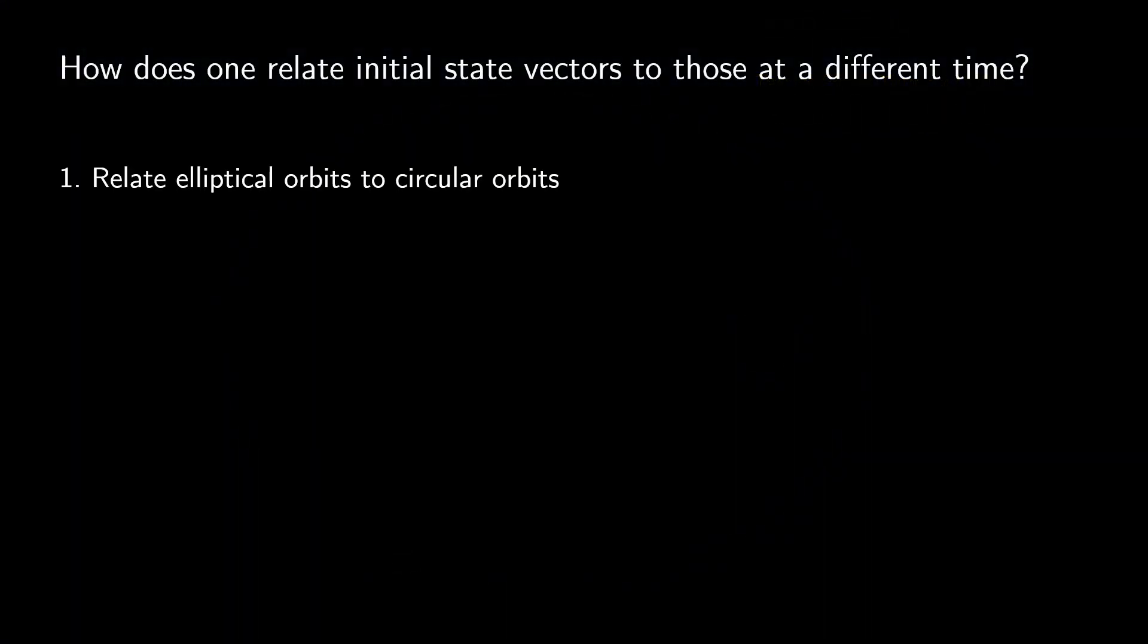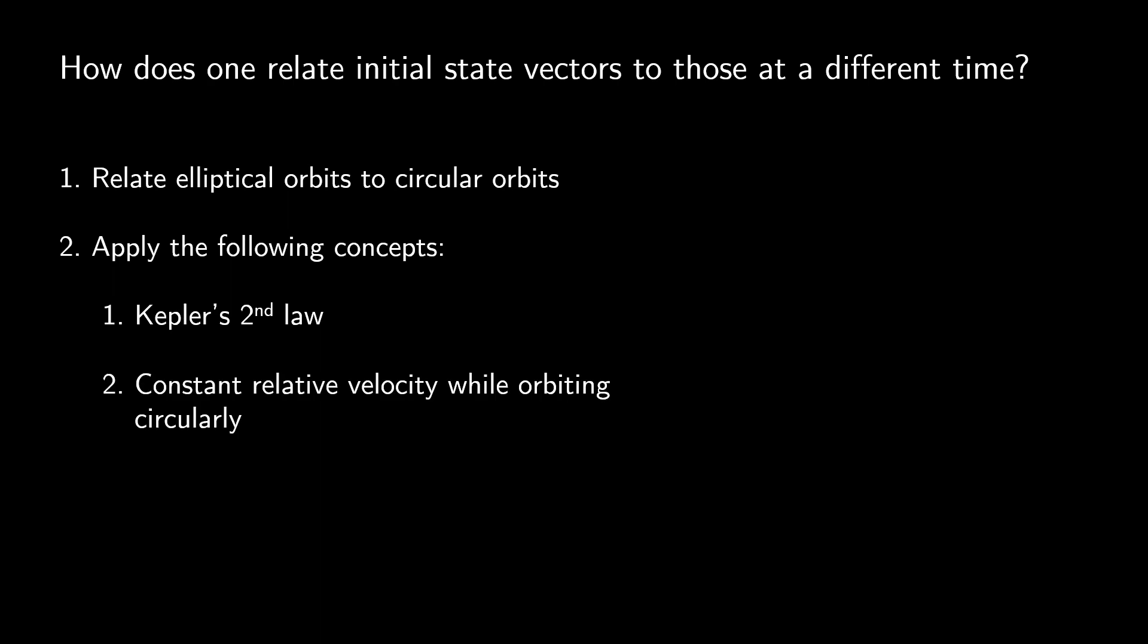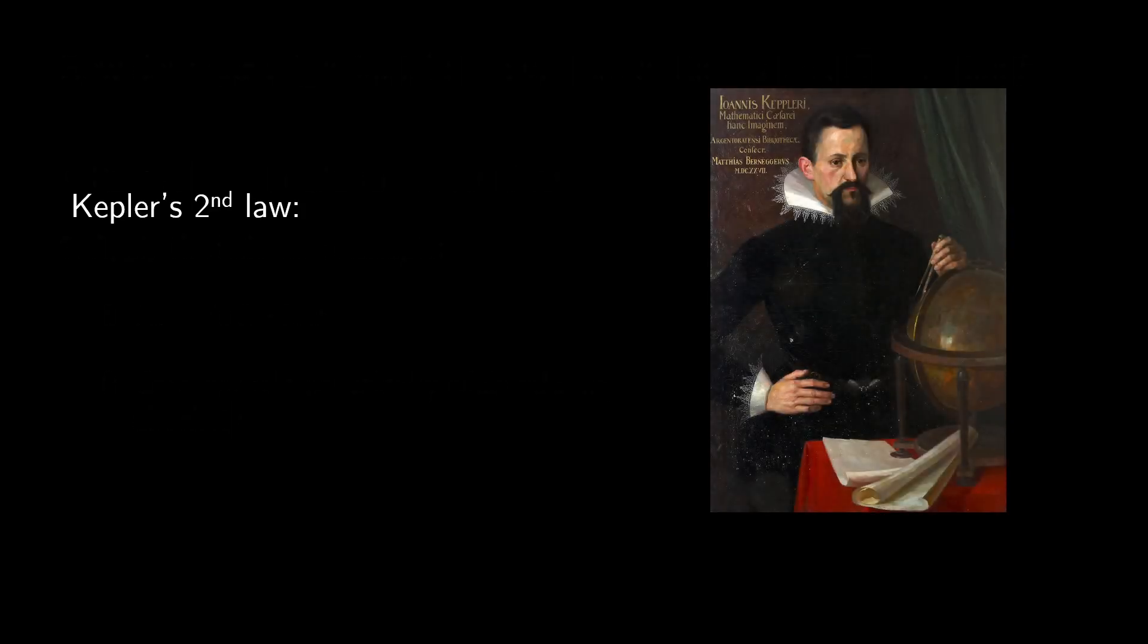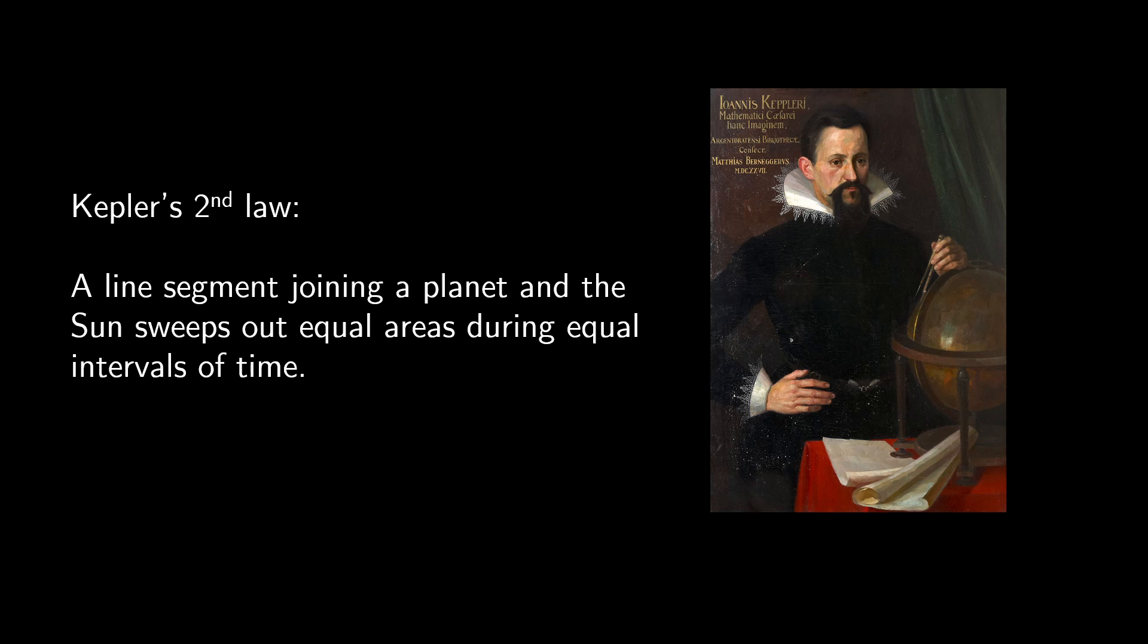Essentially, he compared ellipses to their simpler counterpart, the circle, while employing two basic concepts: his second law of planetary motion and the idea that objects on circular orbits travel with constant angular velocity. First things first, the second law of planetary motion, which states that a line segment joining a planet and the sun sweeps out equal areas during equal intervals of time.